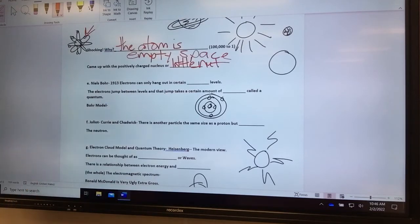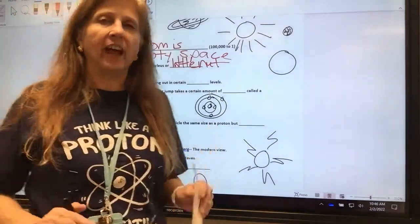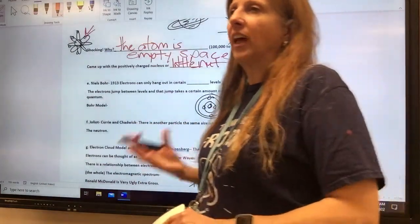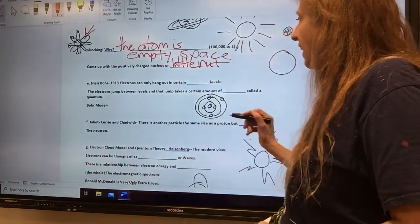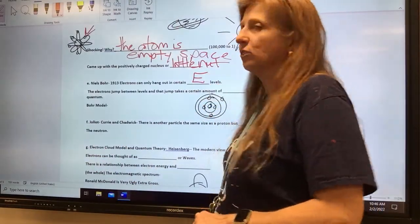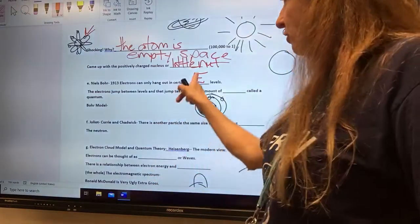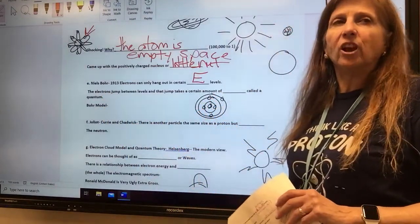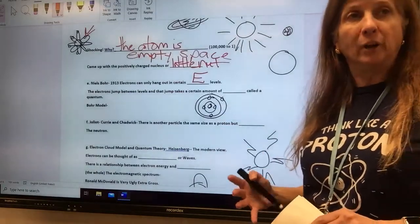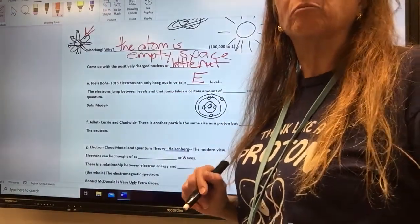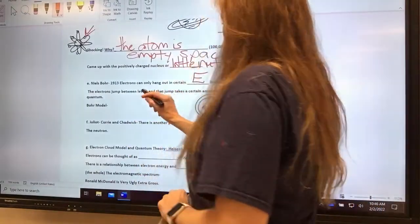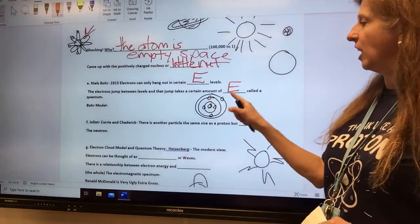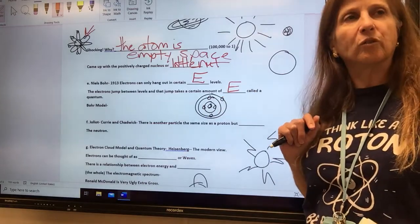Then another guy came along, Niels Bohr in 1913, and he figured out that the electrons can only hang out in certain energy levels, that that's the energy that makes the atom have structure, the electrons hanging out in these energy levels. The symbol for energy in science is a capital E. The electrons hang out in these energy levels, and there's no stairs between them. They have to hop. And that hop is called a quantum leap.